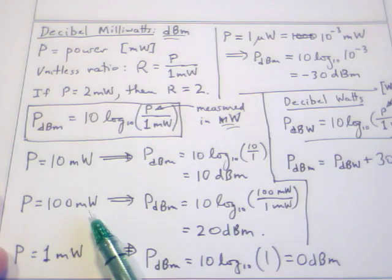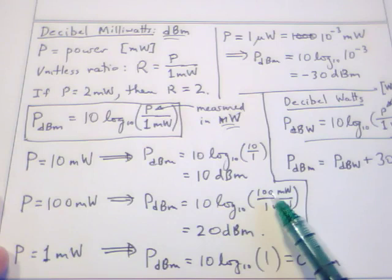If I have a power of 100 milliwatts, you can plug into the same equation. The log base 10 of 100 is 2, because 10 squared is 100. So 2 times 10 is 20, and therefore 100 milliwatts is 20 dBm.